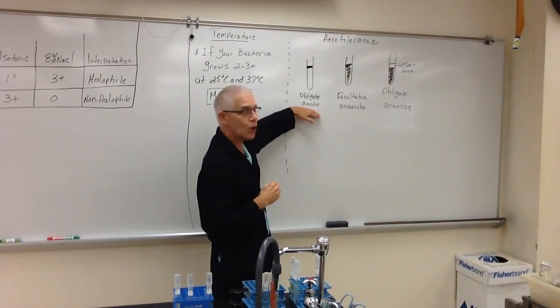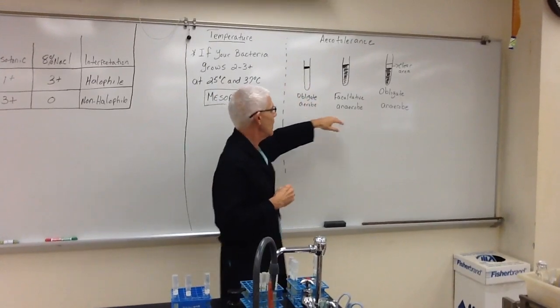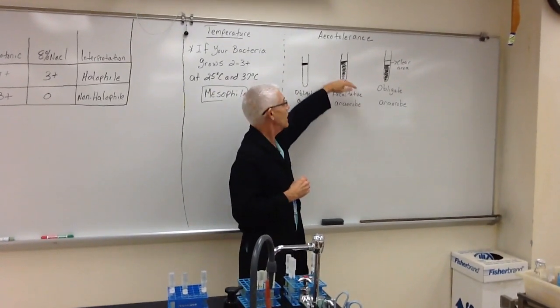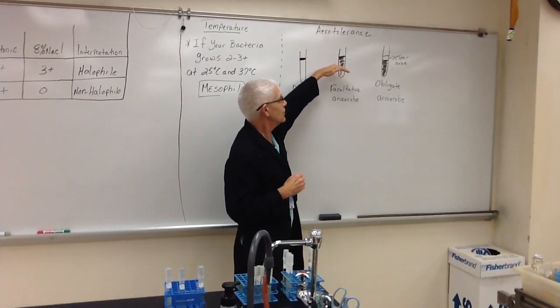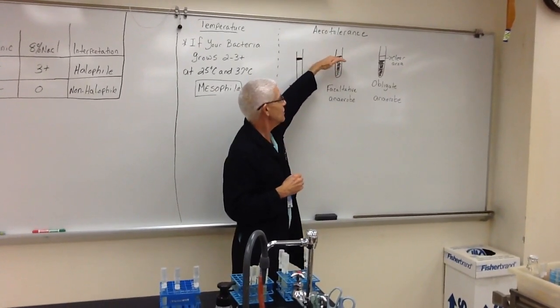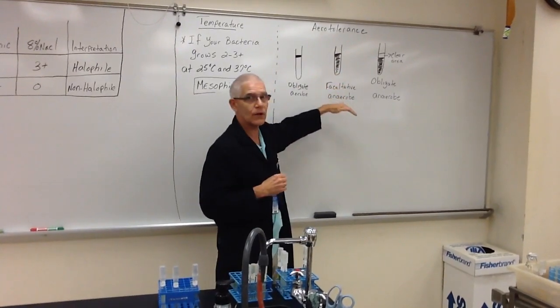So, if you have an obligate aerobe, it's going to grow at the top. If you have a facultative anaerobe, it grows really good at the top, but as there's no room for the microbes to grow to use oxygen, it starts growing throughout the tube.